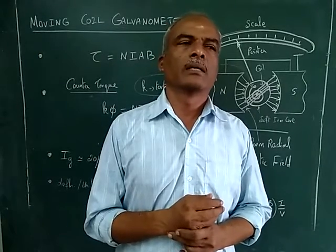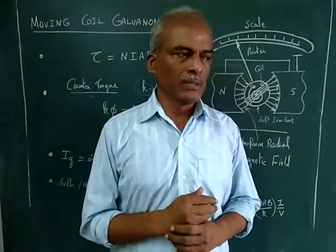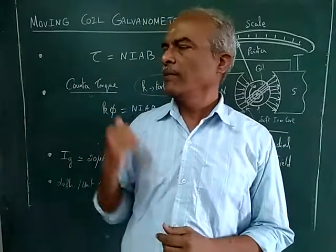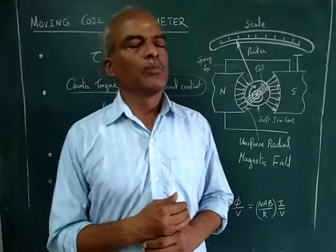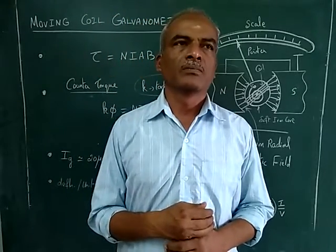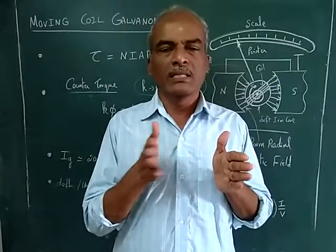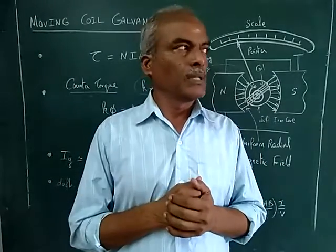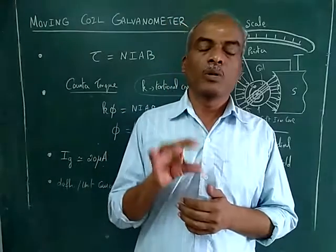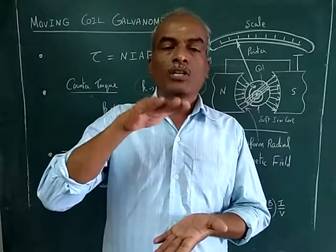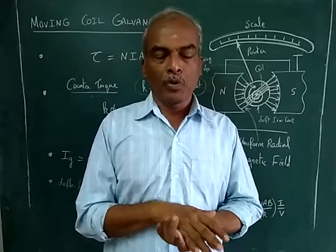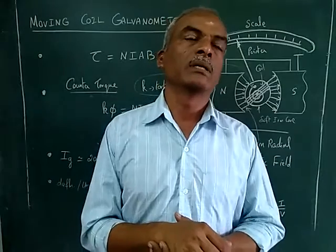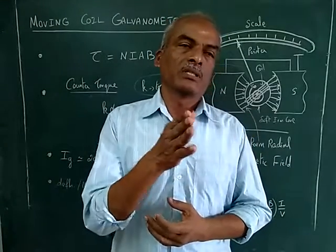In moving coil, the coil will move, whereas in moving iron, the soft iron core will move — that's the difference. In the moving coil meter, there will be a permanent magnet so a magnetic field is established, and in between that steady magnetic field you have a coil suspended. Over the top of the coil you have a pointer with some mechanical balancing arrangement so that it produces deflection.